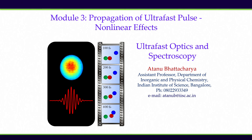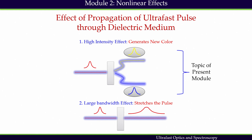Welcome to module 3 of the course Ultrafast Optics and Spectroscopy. In this module, we will learn different non-linear effects due to propagation of an ultrafast pulse, primarily through a dielectric medium. An ultrafast pulse is a propagating electromagnetic wave synthesized by the interference of many plane waves with different colors with a stable phase relationship.